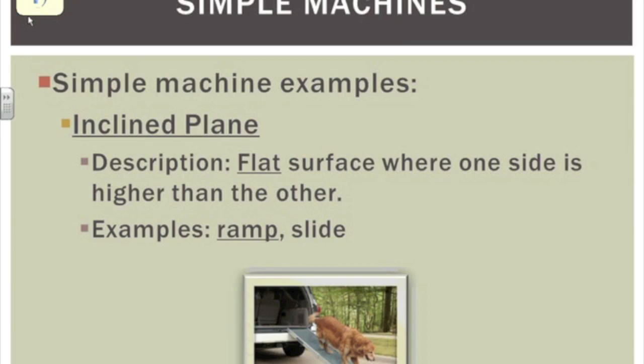An inclined plane is a very simple machine — it's a ramp. It's much easier to push something up a ramp than to simply lift it vertically. It's going to take less force to push up that ramp than to pick it up vertically and put it in the back of a vehicle. A flat surface where one side is higher than the other — a ramp or slide — these are all considered inclined planes.